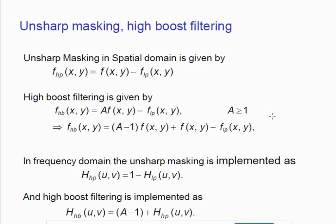Unsharp masking in the spatial domain is defined as: the high pass image equals the original image minus a smooth (low pass) version of the image. When we subtract the smooth version we get a sharpened or high pass image. High boost filtering is similar to unsharp masking, except that we multiply a variable 'a' (where a ≥ 1) with the image before subtracting the smooth version, thereby boosting the high frequency components.